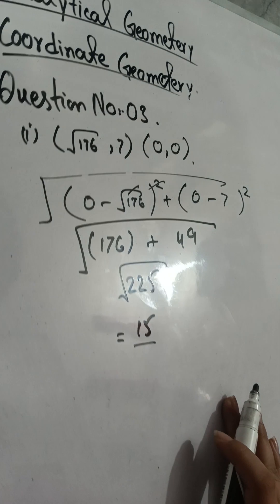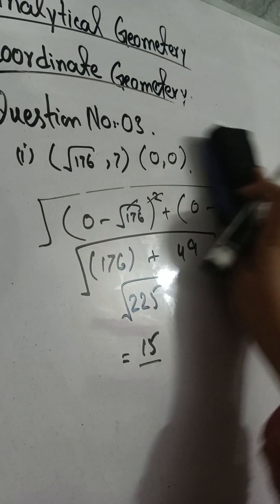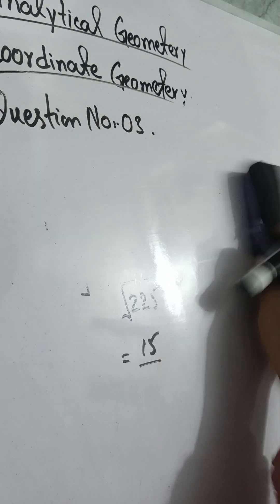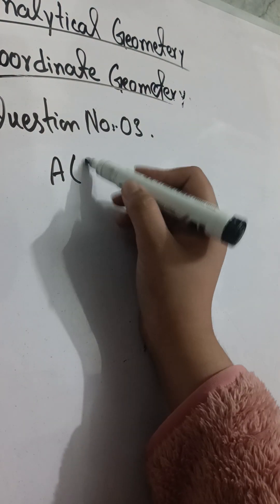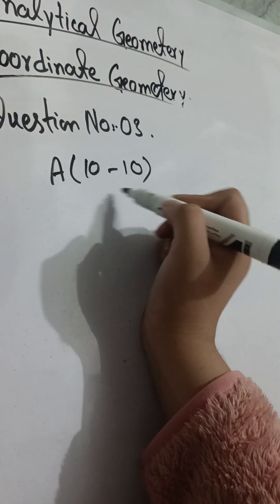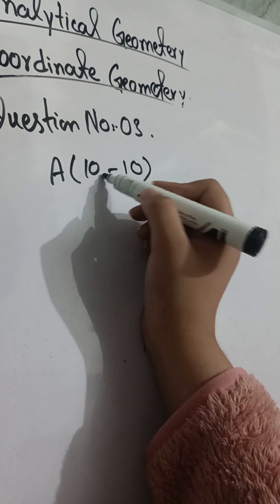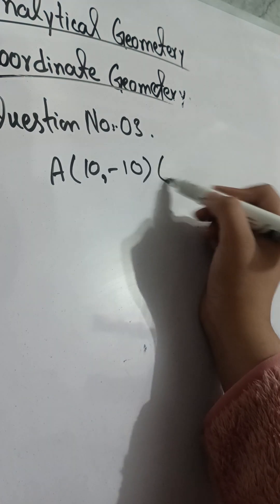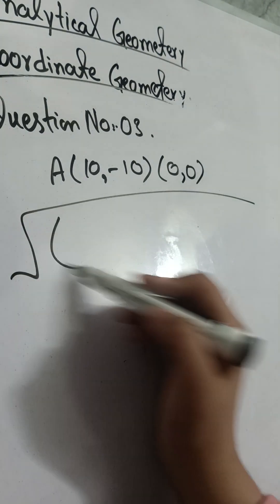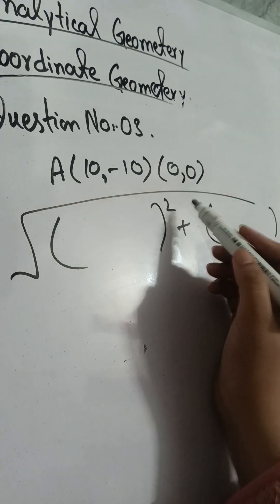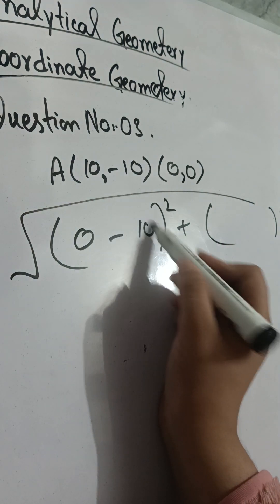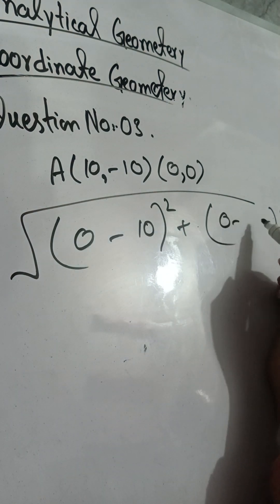If the answer does not come to 15, then you write that these points are not at a distance of 15. Now for question number two, we go to the point (10, -10). We have a positive 10 and a negative 10. Then you put in the points: zero minus 10 and zero minus 10, which gives a positive result.